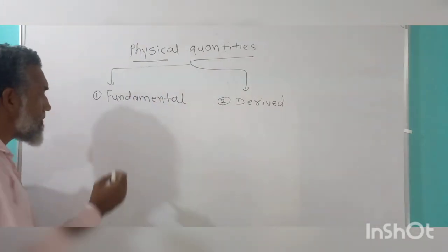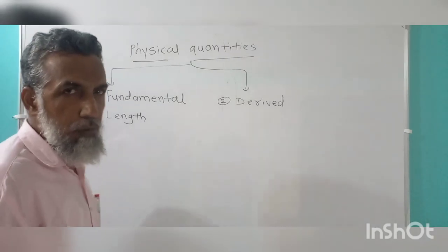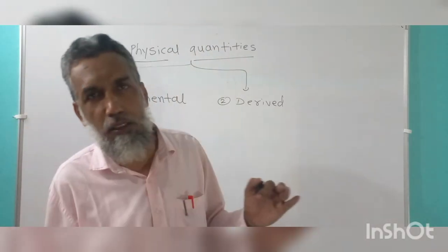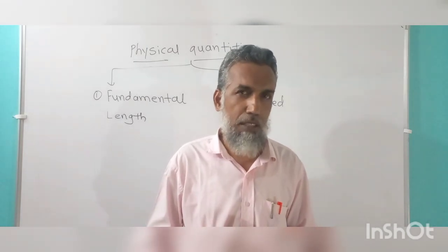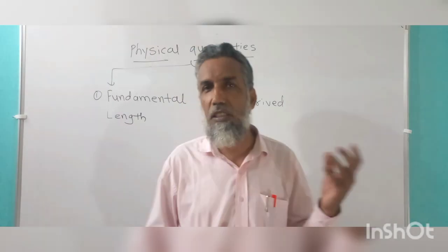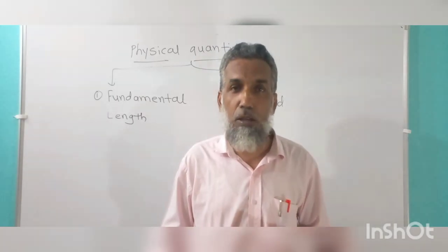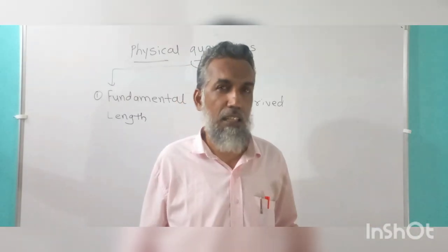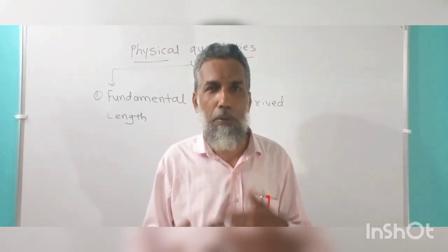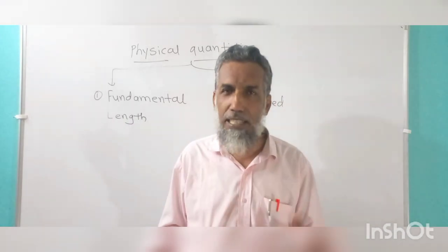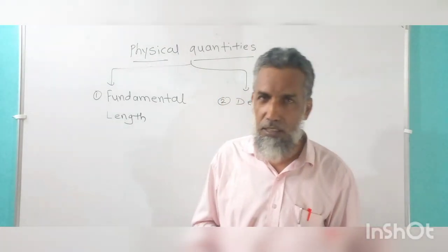Let us take an example — length. If you want to measure the length of a cloth, you will take a scale or measuring tape and then you can measure it. The length of the cloth is independent of time and independent of the mass of that cloth. You can measure it directly without knowing those quantities, and that's why length is called a fundamental quantity.